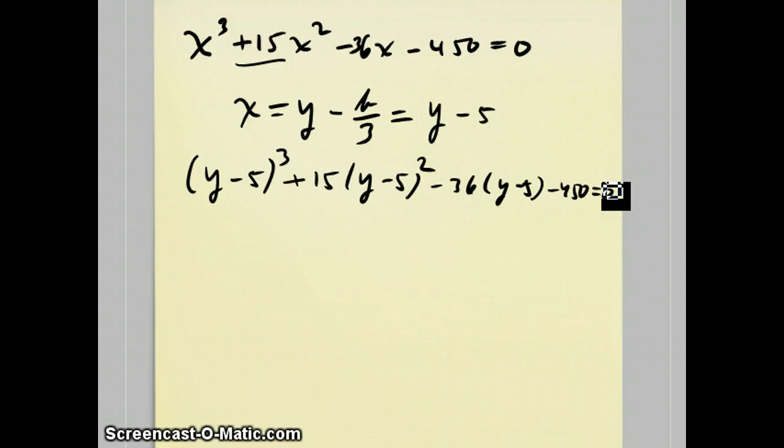And if you actually take the time to expand this out, what will happen is that it will become y³ - 39y - 380 = 0. So the y² term will drop out. And that's important because then I can rearrange this into this form.